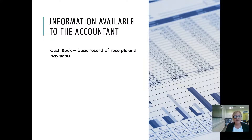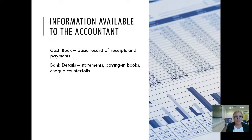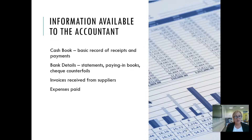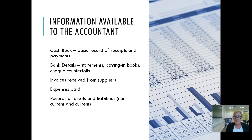Instead of double entry, some businesses rely on collecting all of their receipts, invoices, bank statements and so on and scooping it all into a box file at the end of the financial year. That then lands on the accountant's desk. If you're lucky, the client may have assembled a cash book — a basic record of receipts and payments. You should have some bank statements, paying-in books, cheque counterfoils and so on. You might also have copies of invoices received from suppliers, invoices issued to customers, a list of expenses paid, and records of assets and liabilities — both non-current and current — including money owed to them and inventory. But not always.